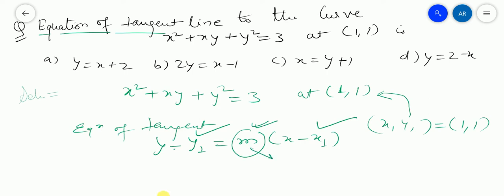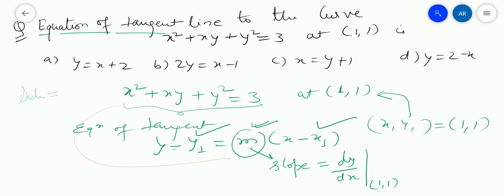So you need to evaluate m. What does m represent? m is the slope. You all know how to find slope — slope is nothing but the first derivative of that function. The slope at a particular point gives you the tangent at that particular point, and that particular point here is (1, 1). So you need to obtain dy/dx. Let us do this.